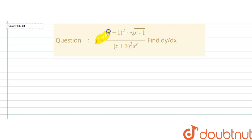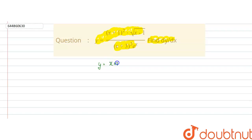In this question we are given that y is equal to x plus 1 whole squared, into root x minus 1, divided by x plus 3 whole cube into e to the power x. And we have to find the value of dy by dx.